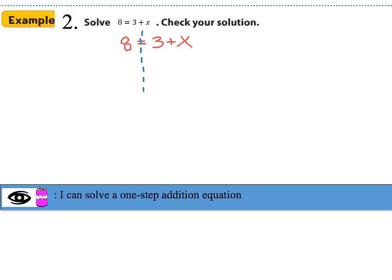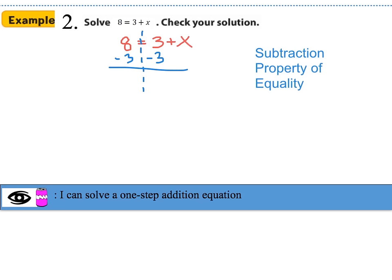I'm going to subtract 3 here, but I have to keep my equation balanced, so I'm going to subtract 3 on the other side as well. This is an example of the subtraction property of equality because we subtracted 3 on both sides. On the right-hand side, 3 minus 3 goes away and x is dropped down — x is now all by itself. On the left-hand side, 8 minus 3 equals 5. So the value of x is equal to 5.